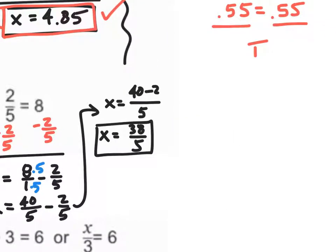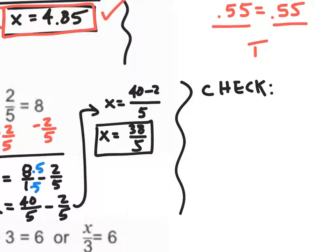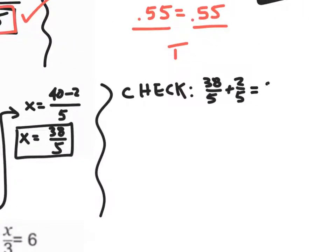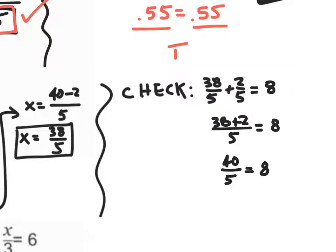Let's check to see if we're right. We get 38 fifths plus 2 fifths. Does that equal 8? Because I already have a common denominator, I do 38 plus 2 over 5: that's 40 over 5. Is that equal to 8? 40 divided by 5 is 8. 8 equals 8 — that is true, therefore this is correct.